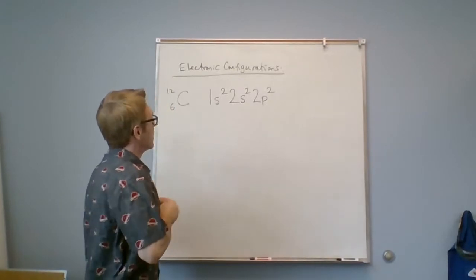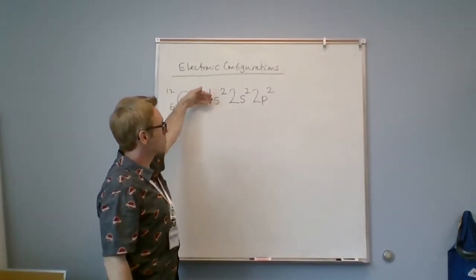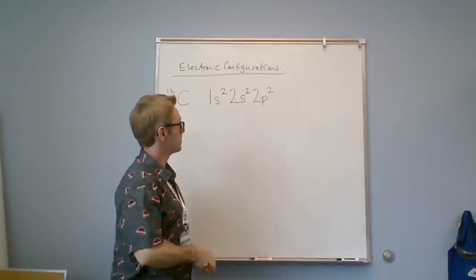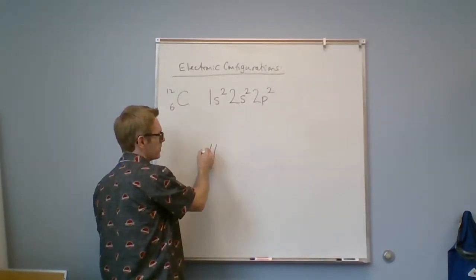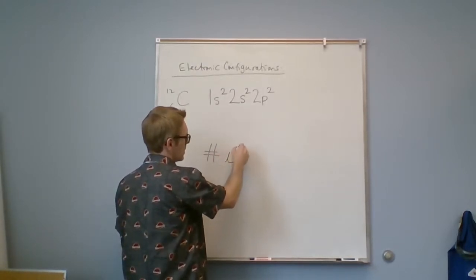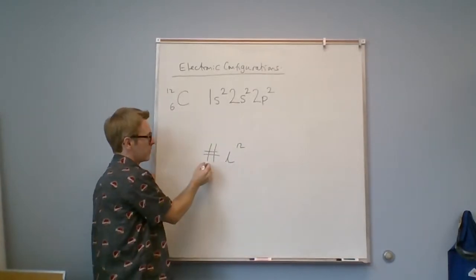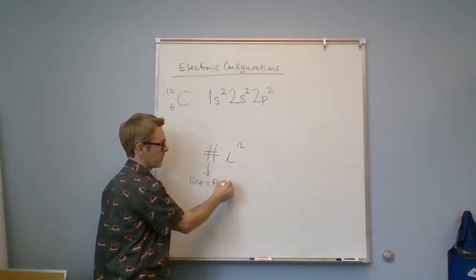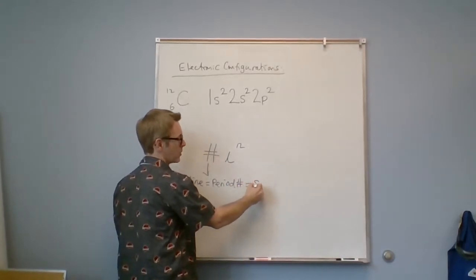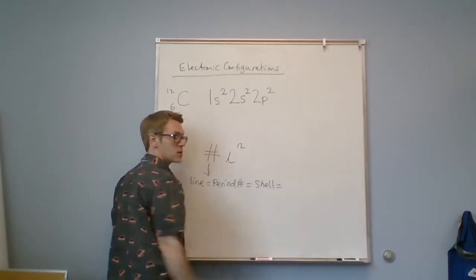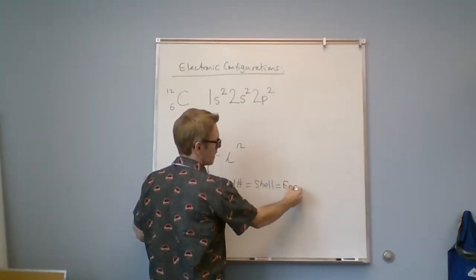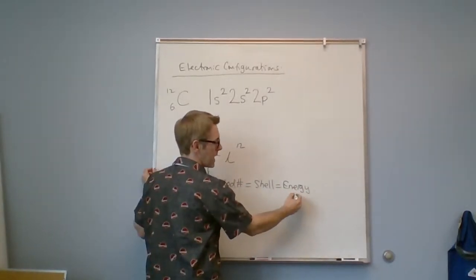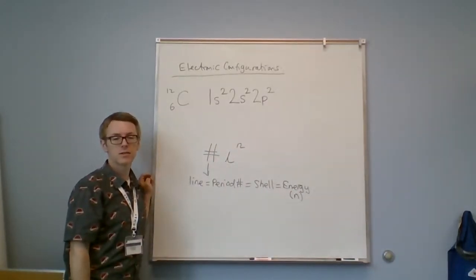Notice we have groups of three: a number, a letter, and a superscript — repeated for each term. The number is the line, which equals the period number. It's also known as the shell, and interestingly it's also the energy — the n from our calculations in a previous video. The letter is the subshell. It's also the block — so if I'm in the s block I have an s subshell.